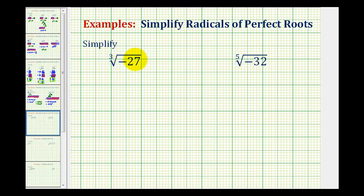We want to simplify the cube root of negative 27 and the fifth root of negative 32. Because the number underneath the radical or the radicand is negative, these may seem more challenging, but as long as we remember that the product of an odd number of negatives is still negative, we'll be able to simplify these.